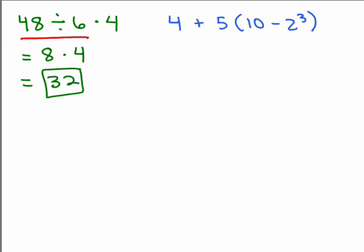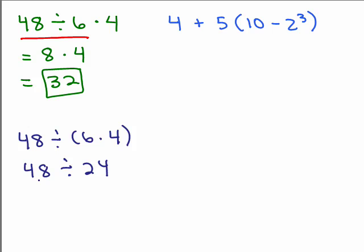Now suppose this had been a different problem: 48 divided by (6 times 4). In this case we do what's in the parentheses first — 6 times 4 is 24 — and then 48 divided by 24 gives 2. So again, parentheses can make quite a difference in the answer.